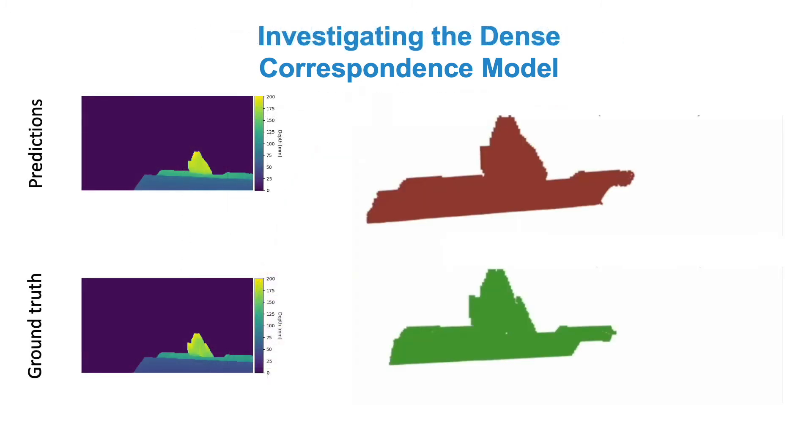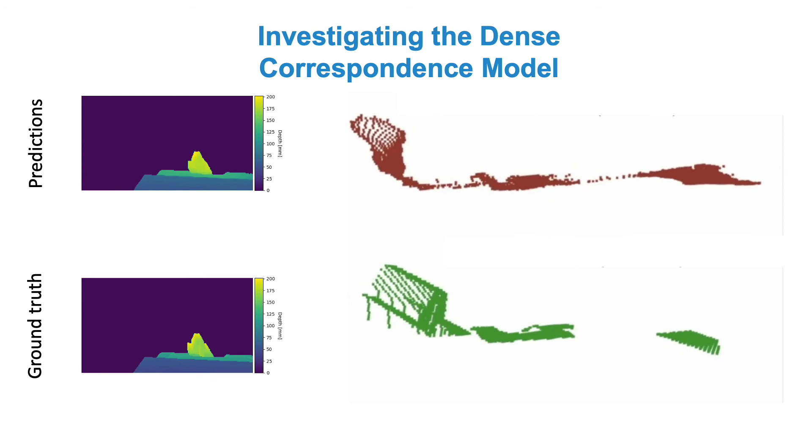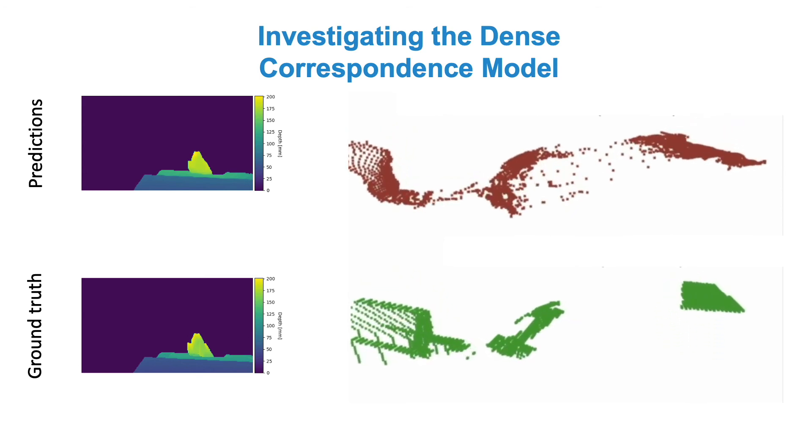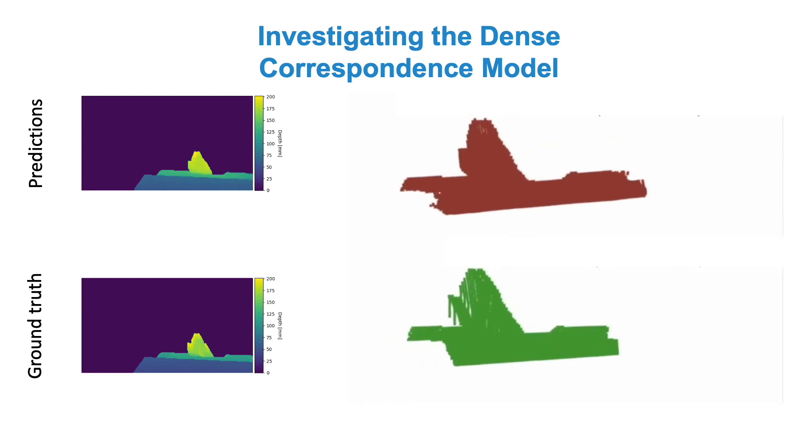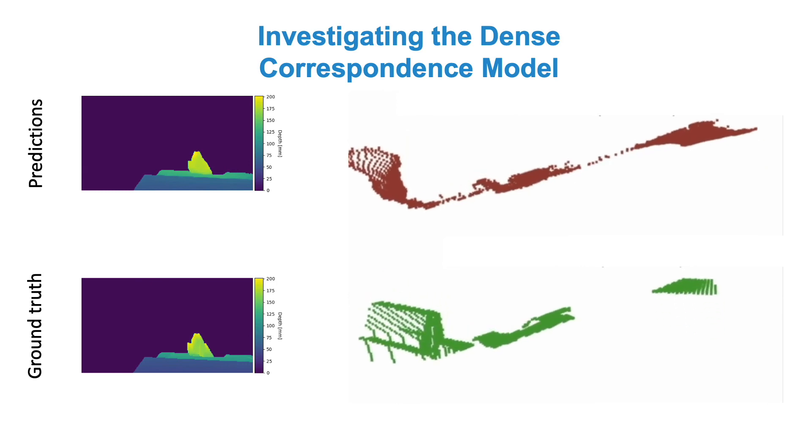Finally, for the dense correspondence model, we analyze the output of the neural network. Although in image space the output looks convincing, in 3D space we notice that those outputs suffer from the smoothness bias of neural network predictions. This makes ICP fail to solve for the correct camera-to-end effector pose.